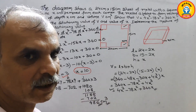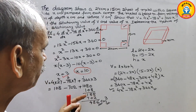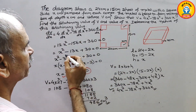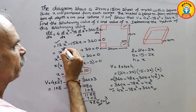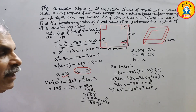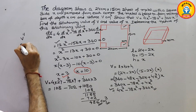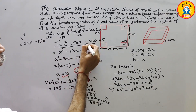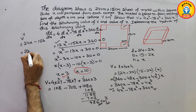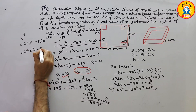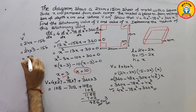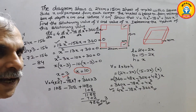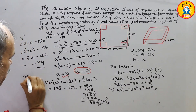Next, to determine the nature of the stationary value, we find the second derivative. V'' = d/dx(12x² minus 156x plus 360) = 24x minus 156. Substituting x = 3: V'' = 24(3) minus 156 = 72 minus 156 = minus 84. Since V'' is negative, the stationary point is a maximum.